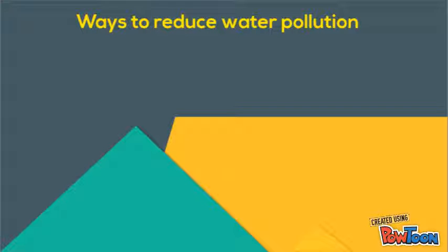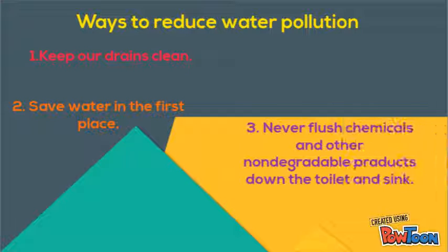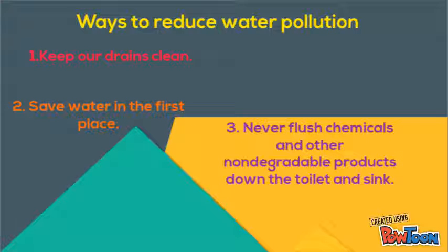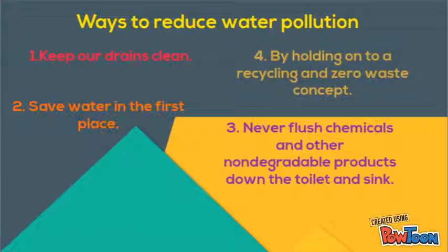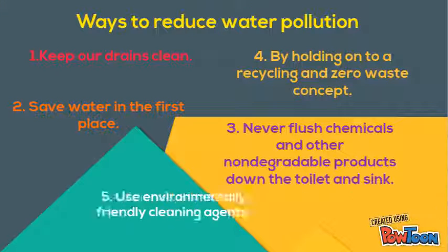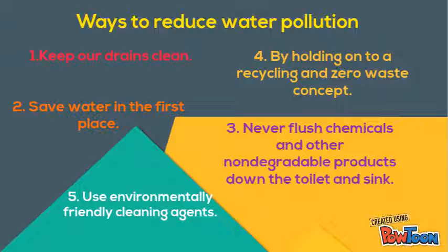There are five ways to reduce water pollution. First, keep our drains clean. Second, save water in the first place. Third, never flush chemicals and other non-degradable products down the toilet. Fourth, adopt a recycling and zero waste concept. Fifth, use environmentally friendly cleaning agents.